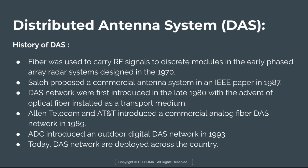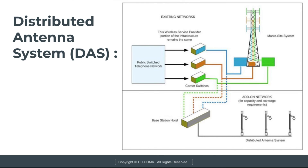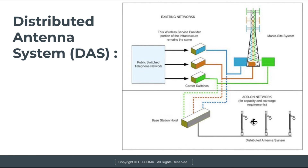This diagram shows the difference between a macro site and a distributed antenna system site. The macro site consists of a 200-foot tower with multiple equipment including a public switched telephone network and carrier switches that carry signaling to the antenna and back to the PSTN. In contrast, the DAS site requires 40-foot light poles for one BTS housing multiple carrier equipment, with DAS antennas installed on these light poles. This is the difference between the macro site and the DAS site, concluding the introduction to distributed antenna systems.